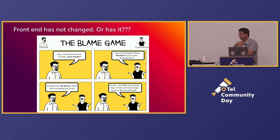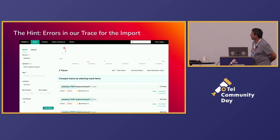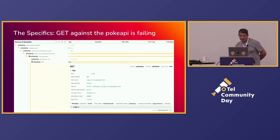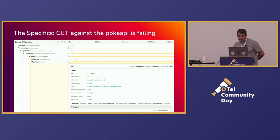You know, I think the SREs are using tracing in production. Why don't we set it up in QA and take a look? So we do it, and we run the test again, and we see that we're getting a couple of errors. We drill down, and we see we're reaching out to the PokeAPI with version 1.9, trying to get a test result for ID 143, and it's getting an error.